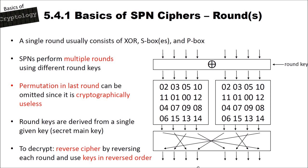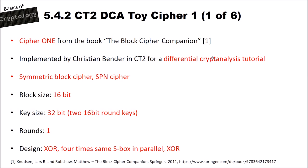Let's look at our first toy cipher implemented in CrypTool 2 — Cipher 1 from the book 'The Block Cipher Companion' by Knudsen. It was implemented by Christian Bender in CrypTool 2 for a differential cryptanalysis tutorial. This first toy cipher is a symmetric block cipher, specifically an SPN cipher, with a block size of 16 bits and a key size of 32 bits (two 16-bit round keys).